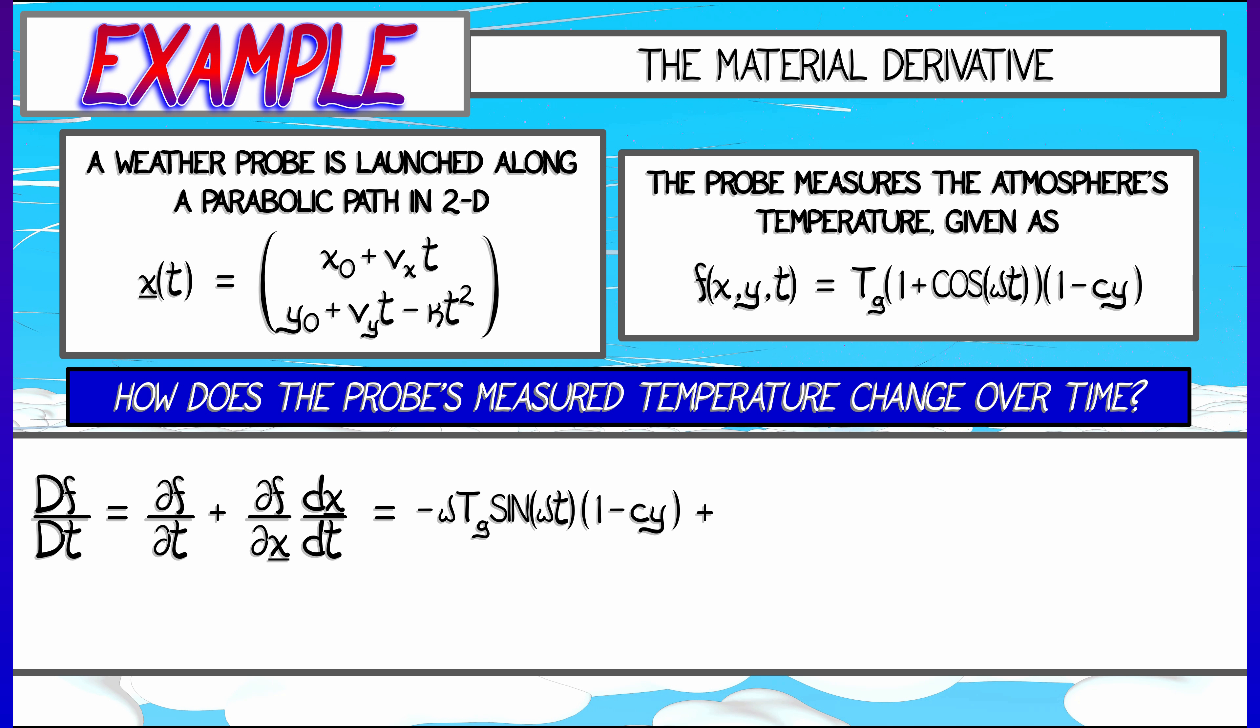It gets more interesting when you start doing the derivatives with respect to space because that's going to be a matrix. I take the partial of F with respect to the X variable, that's zero. Then the partial of F, that temperature field, with respect to the Y variable, and I get minus that thing that you see there.